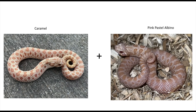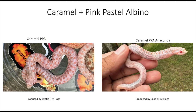The next combination is adding the pink pastel gene. I don't think this has a name yet — these two animals were produced by Esalen at Exotic Fire Hogs. You have the caramel PPA and then the anaconda version of it.